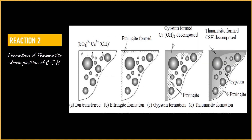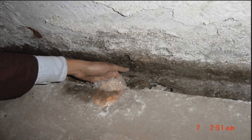Other than ettringite formation, a second form of attack is the formation of thaumasite. Thaumasite forms during sulfate attack when sulfates react with CSH — calcium silicate hydrate — which is the main strength-giving component of the cement paste, as studied in the hydration of OPC. Thaumasite can cause significant damage: it forms expansive crystals within the concrete matrix, leading to cracking, loss of strength, and deterioration of the overall structure. Since the formation of ettringite and thaumasite compromises structural integrity, the main solution is to reduce the C3A content — this is how sulfate-resisting cement was developed.